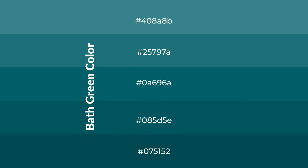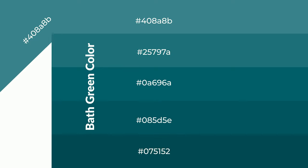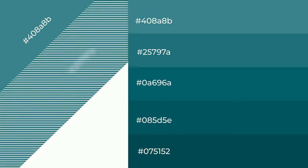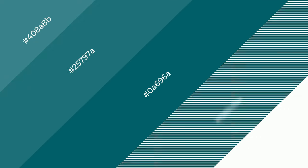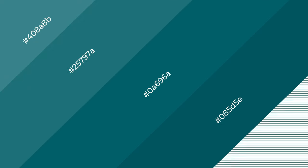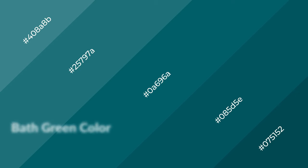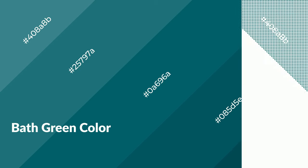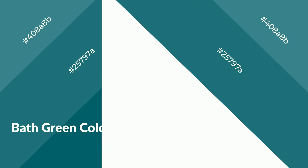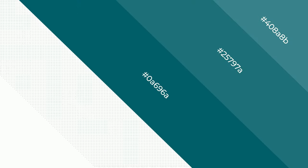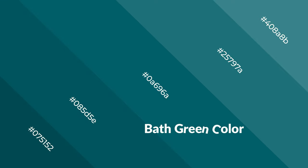To generate shades of a color, we add black to the color. Shades are used in patterns, 3D effects, and layers, and they create depth and drama. Bath green is a cool color and it emits calming, serene, soothing, refreshing, spacious, unwinding, peaceful, and relaxed emotions.